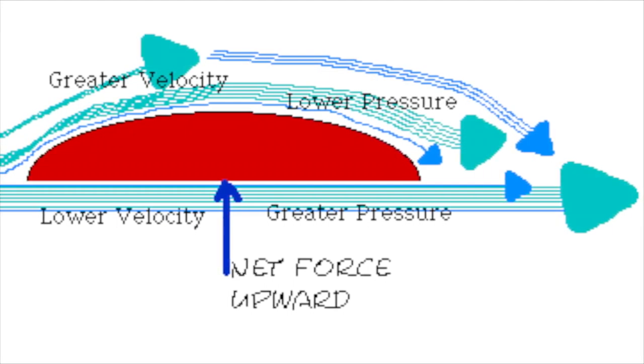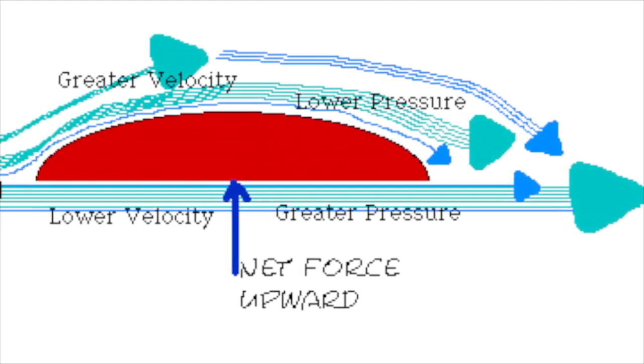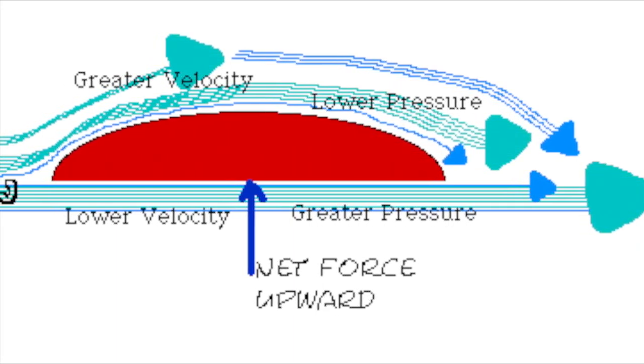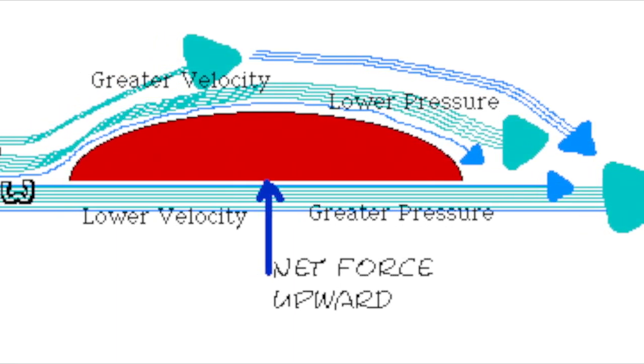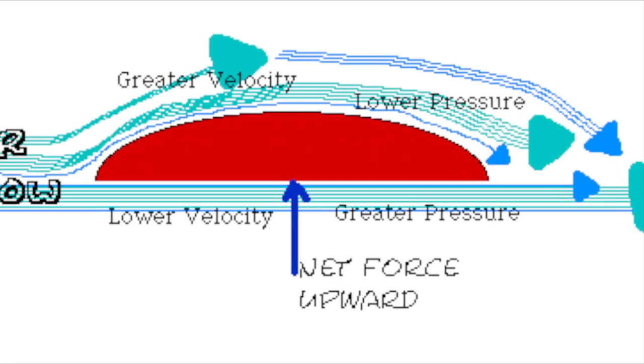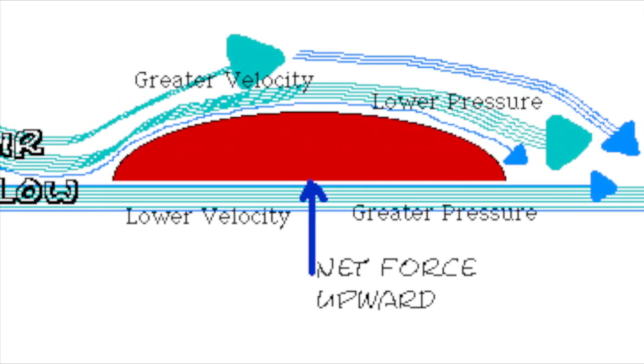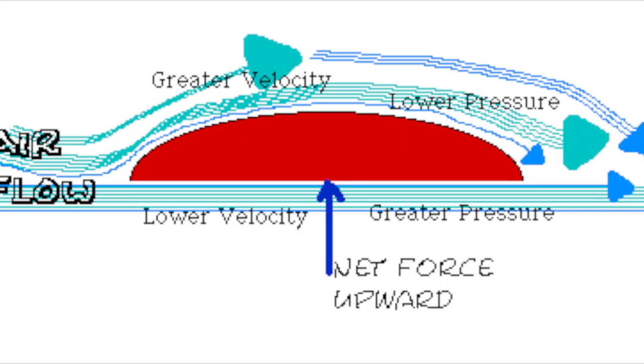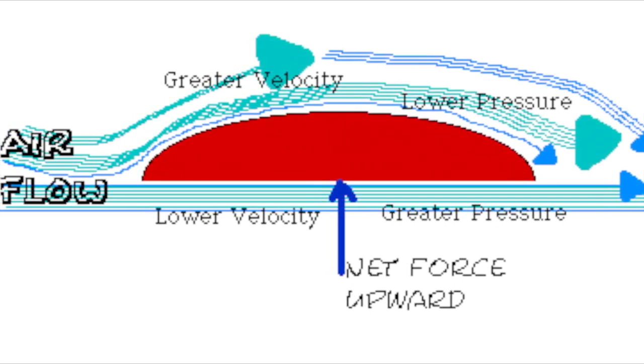When a Frisbee is thrown, the air must be moving faster under the Frisbee than the air above the Frisbee. This creates higher pressure on the bottom, which causes upward net force, which is what creates lift. If this didn't occur, then the Frisbees would fall to the ground almost immediately.